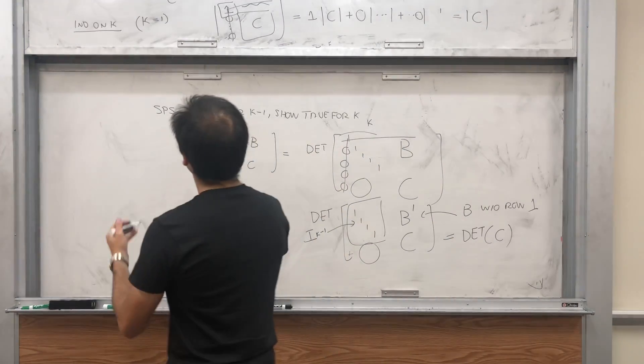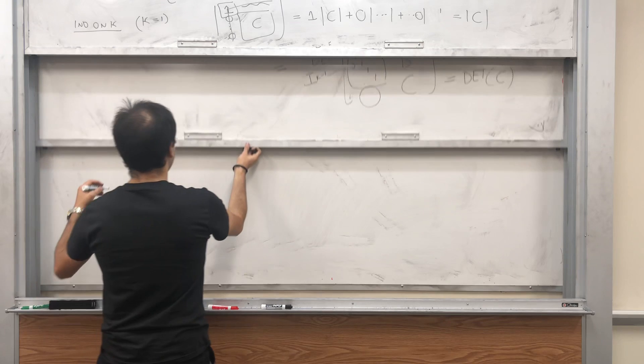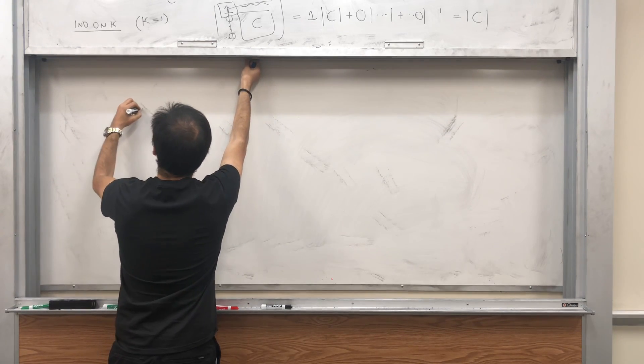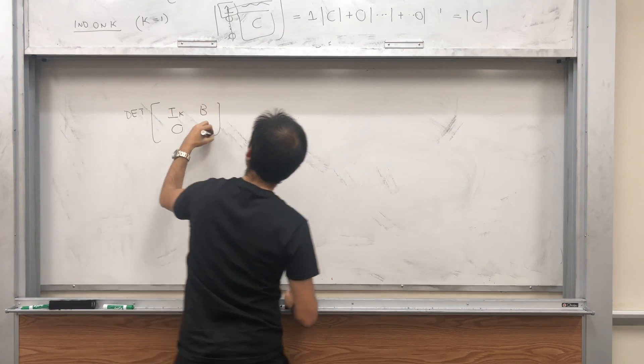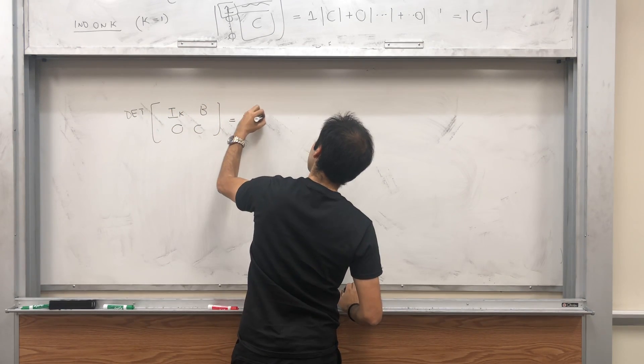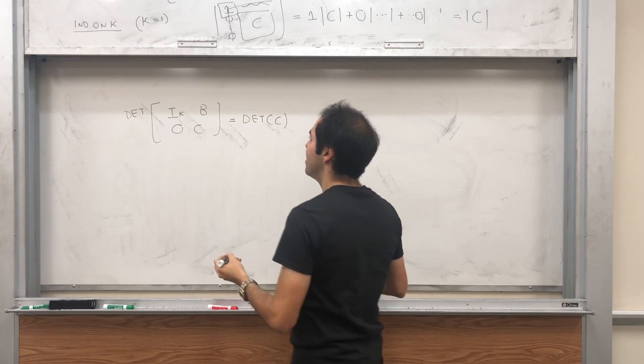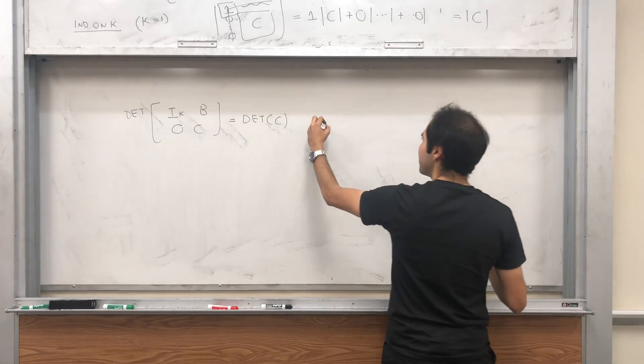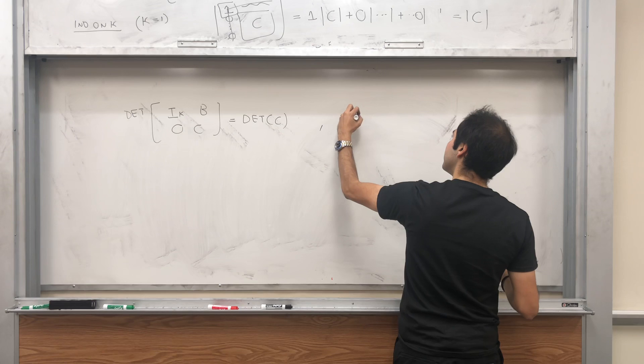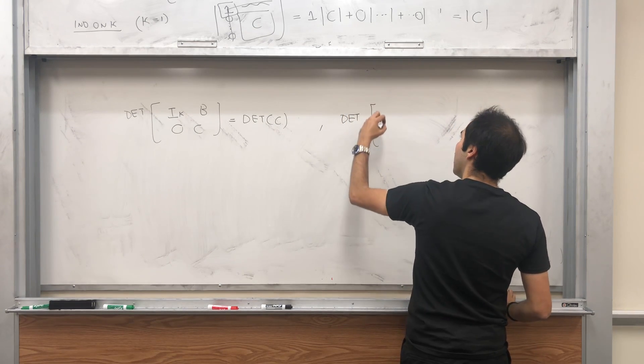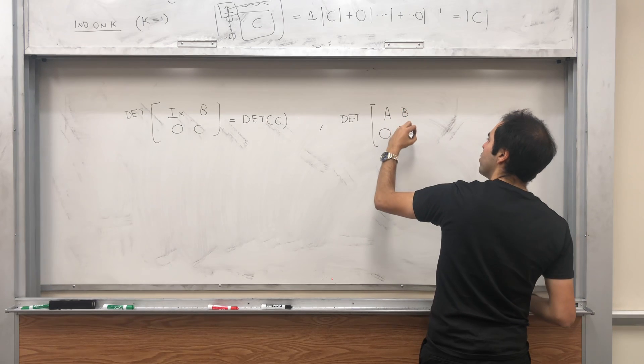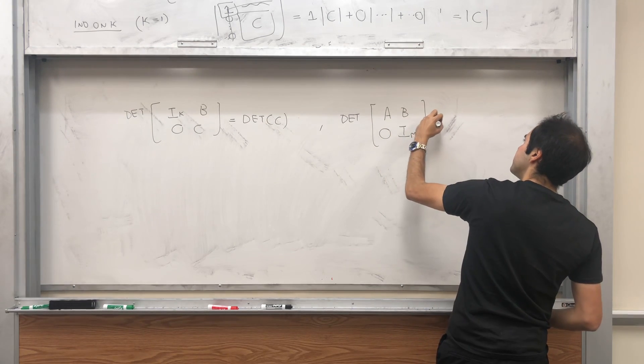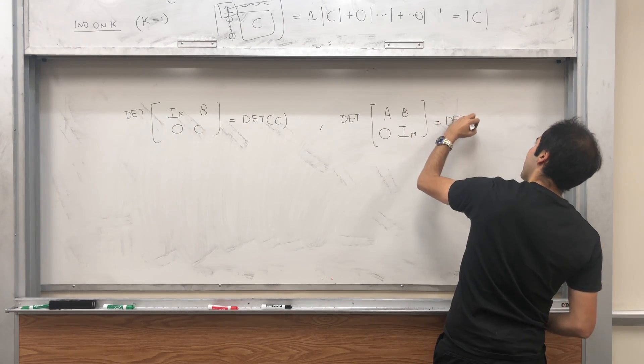So what we've shown is that the determinant of [[I_k, B], [0, C]] is indeed the determinant of C. And in an entirely analogous way you can show that the determinant of [[A, B], [0, I_m]] is also equal to the determinant of A.